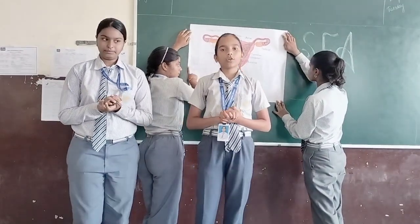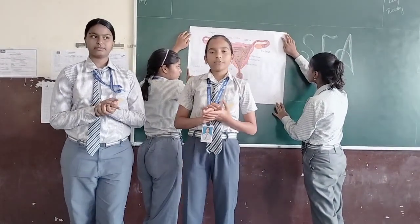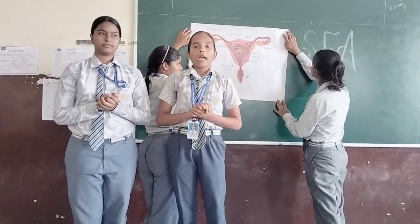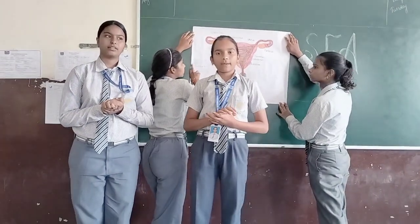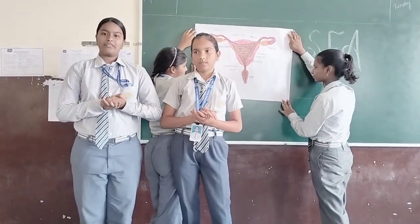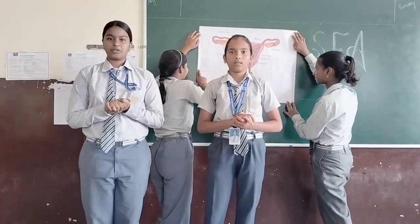The Uterus consists of 3 layers: Endometrium, Myometrium, and Perimetrium. Now I will tell you about the Uterus.